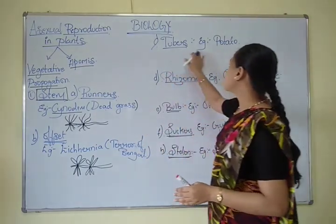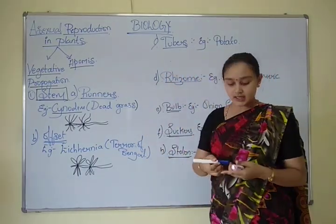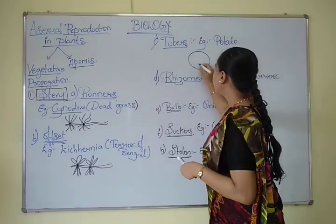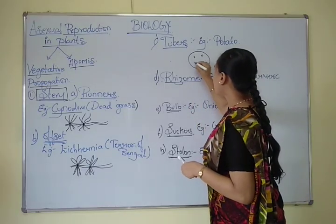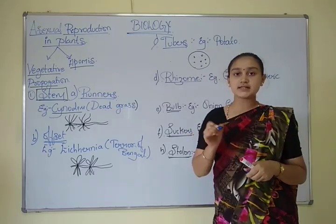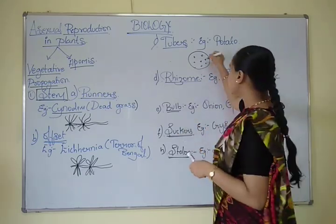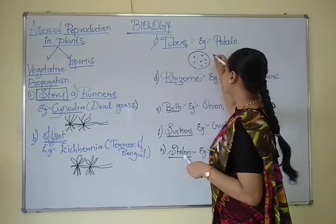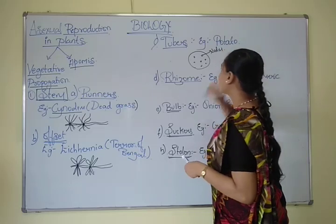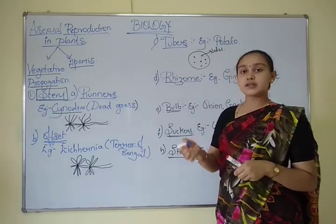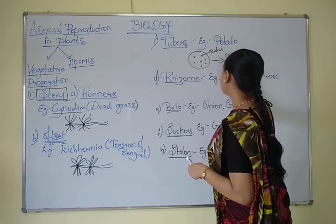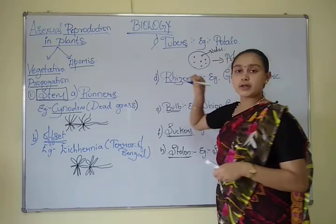The next type is tuber. The example is potato. In the potato, there are certain dot-like structures which are nothing but nodes. When these nodes come into contact with the soil, they develop into a new plant species of potato.